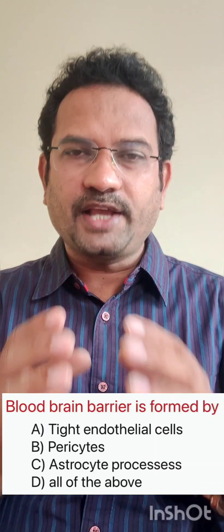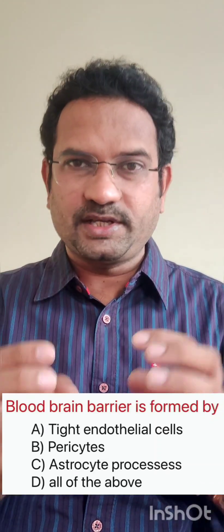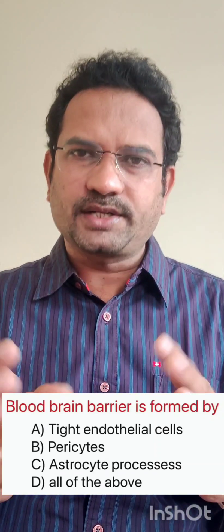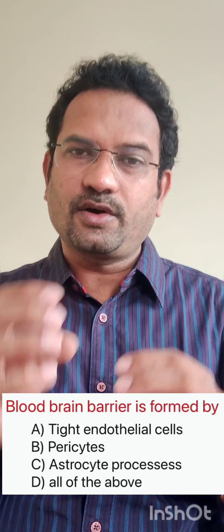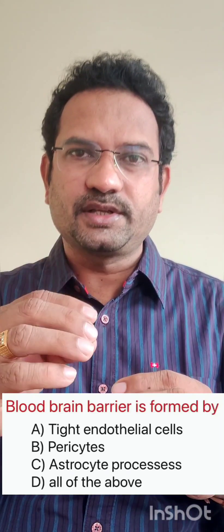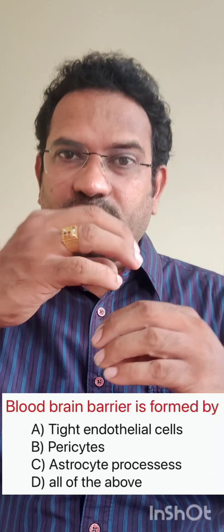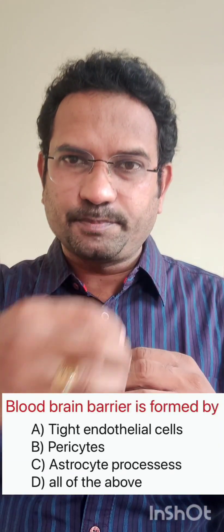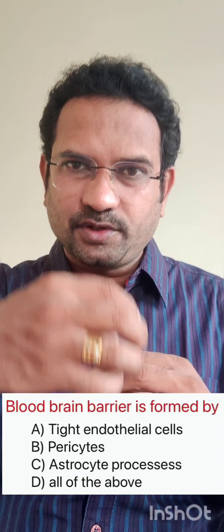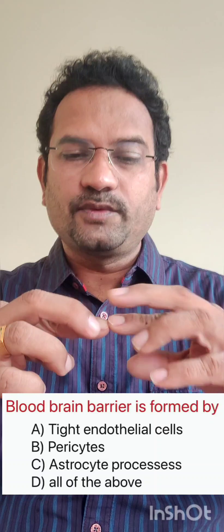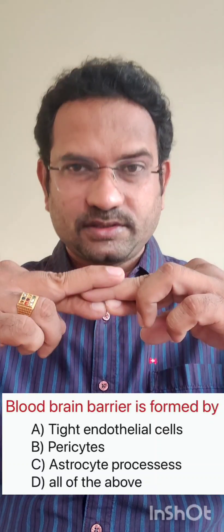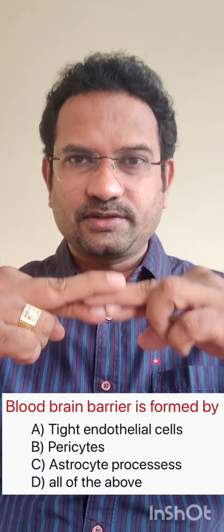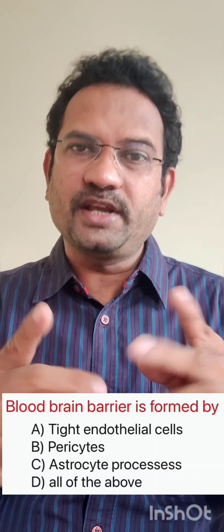Astrocytes are specialized cells which appear like stars, hence they are called astrocytes. Certain processes and branches come out of the cell that cover these tight endothelial junctions. So all three together make the blood-brain barrier.